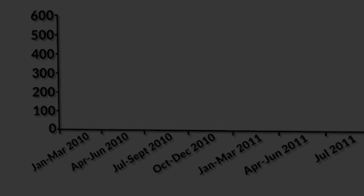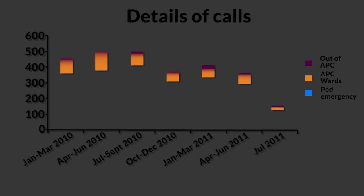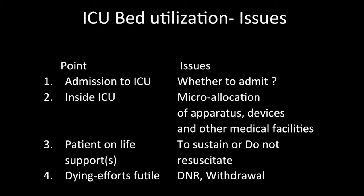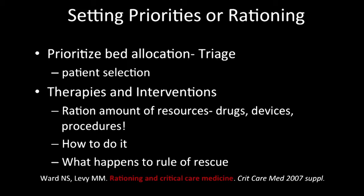These patients' transfer requests come from both places — wards mostly, but mostly from emergency, because the acute care load is generally coming from emergency. The issue for us is whether to admit, and once you have admitted, what is the microallocation of resources, and whether to sustain or not sustain. I will focus mainly on how we prioritize based on patient characteristics and the various therapies and interventions that the patient needs.